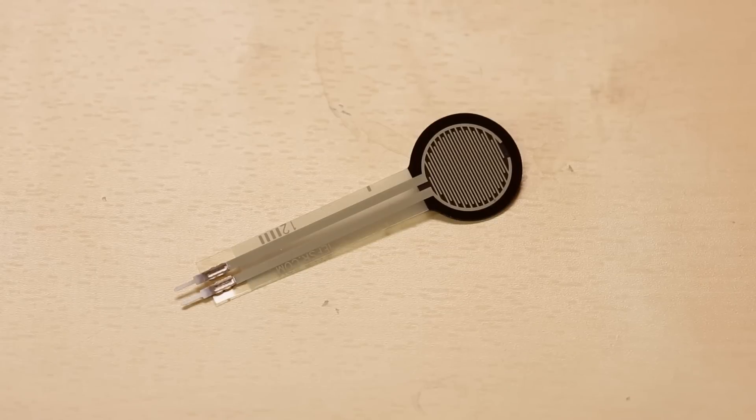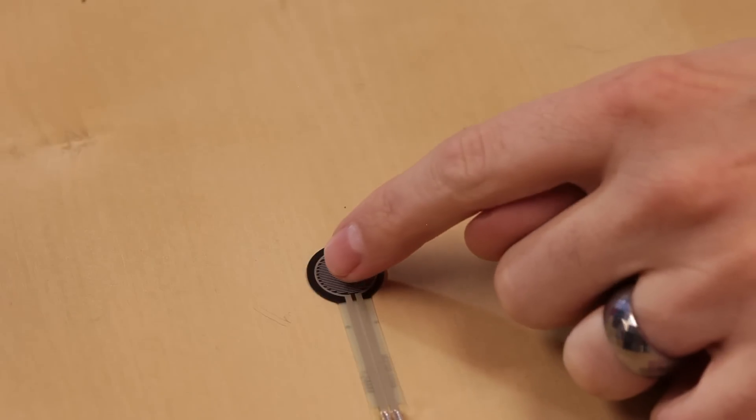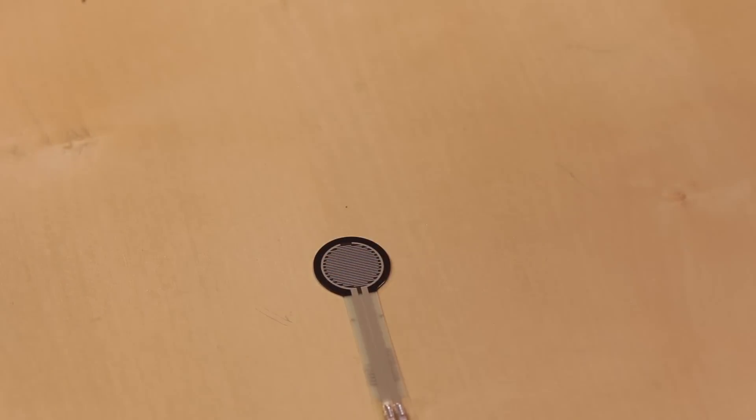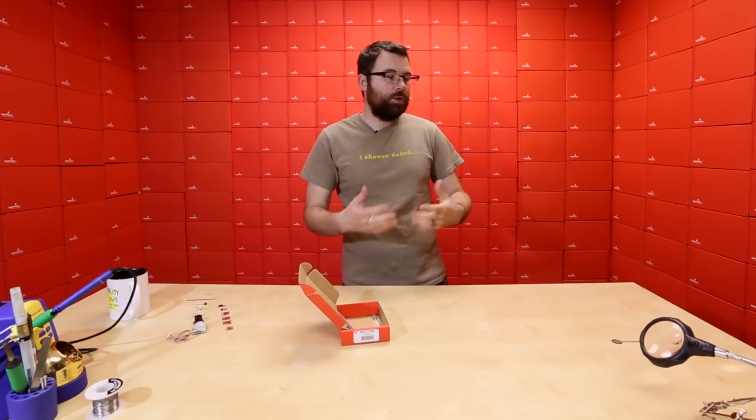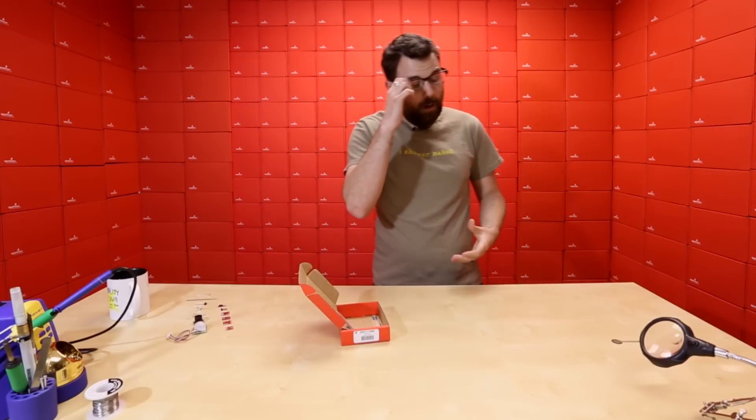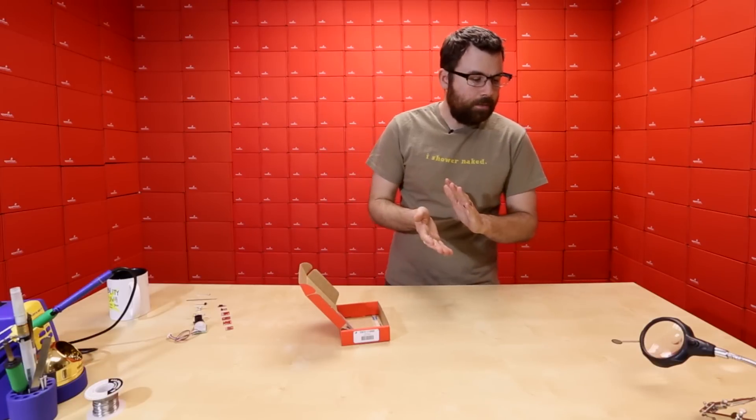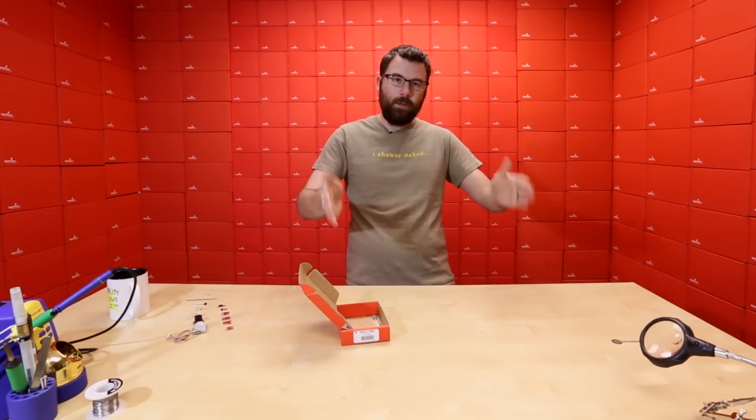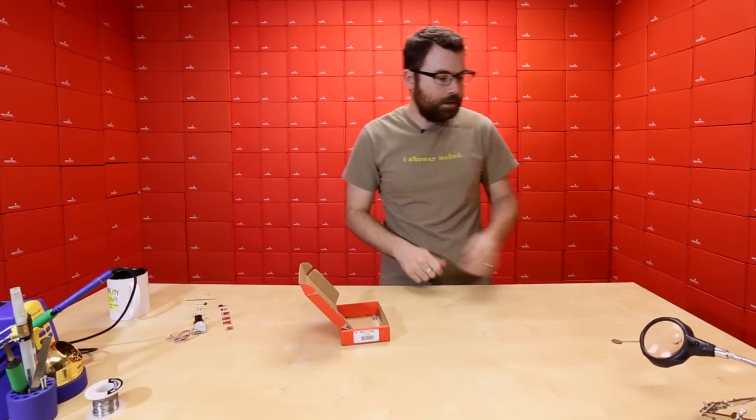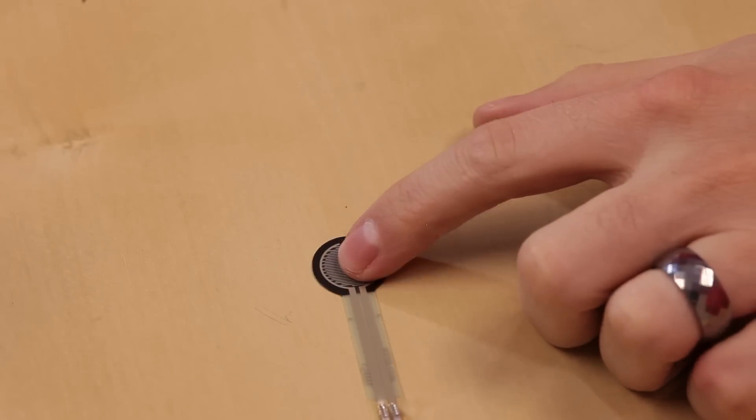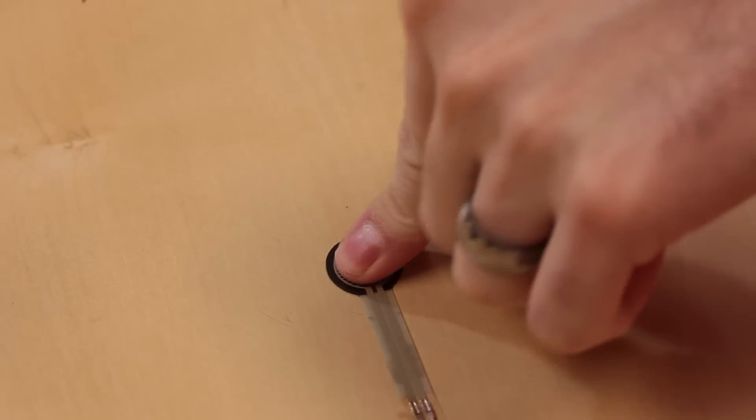Here we have the force-sensitive resistor. When you press on this, the amount of pressure that you put into it will change the resistance value. I think this goes from like 100 grams up to 10 kilograms, about the measuring range that it has. So if you press a little bit on it, the resistance will go up, and as you press more, it changes.